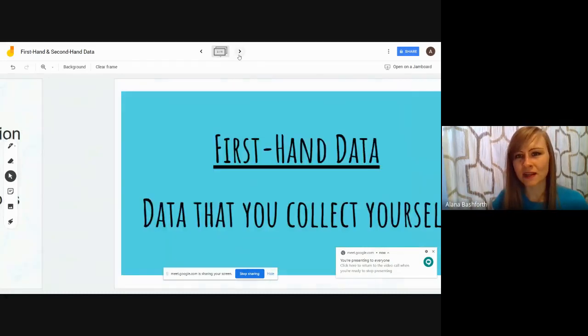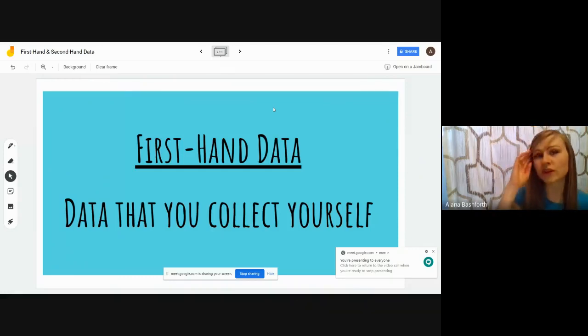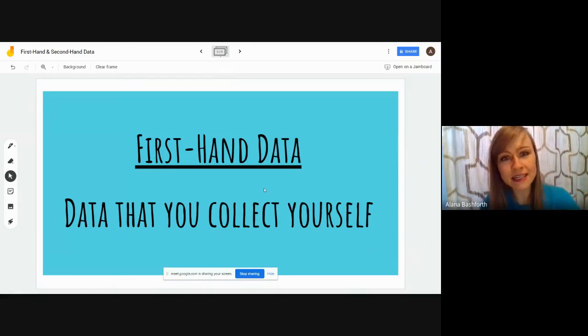The difference between first-hand data and second-hand data is with first-hand data you collect it yourself. If you yourself collect it, then to you it's first-hand data. If I collect data, like if I take a tally of whose favorite animal is what in the class, if it's me just doing it, then it's my first-hand data and your second-hand data. Now if we do that together as a class, then it's all of our first-hand data and then it would be like another class with second-hand data.